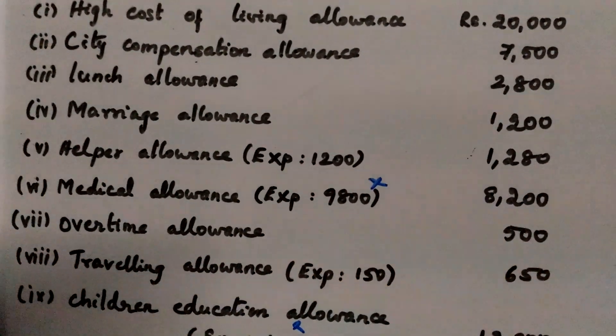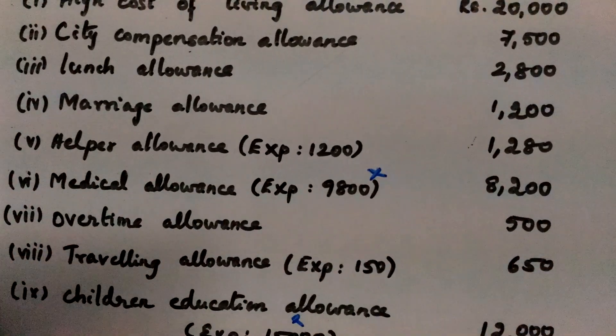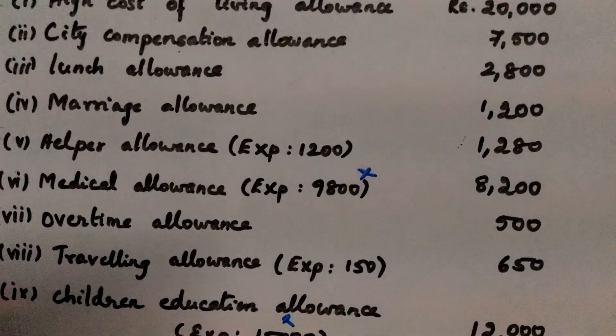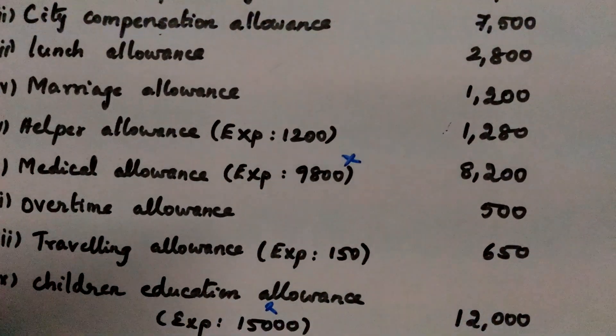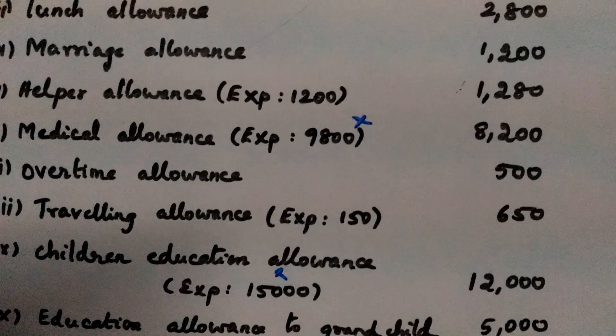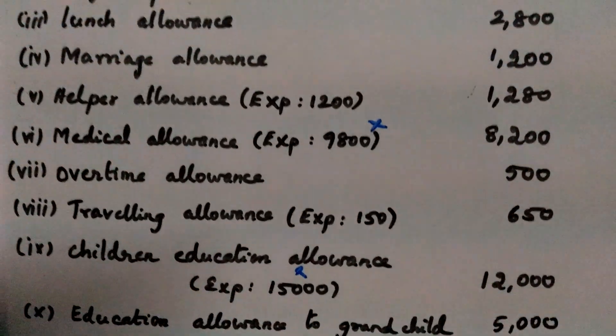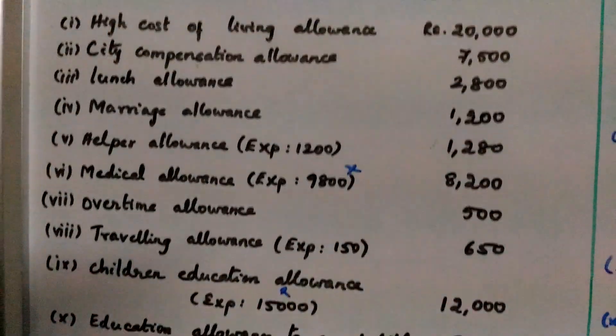Helper Allowance actual expense: $1,200. Medical Allowance: $8,200, actual expense $9,800. Overtime Allowance: $500. Traveling Allowance: $650.